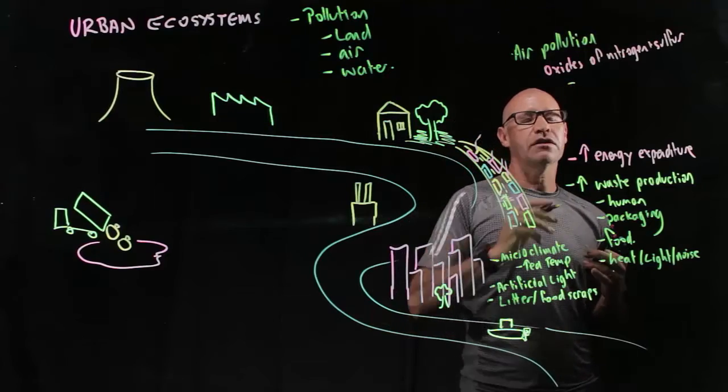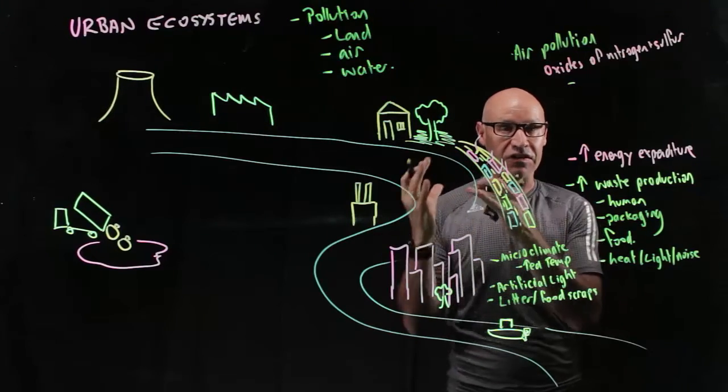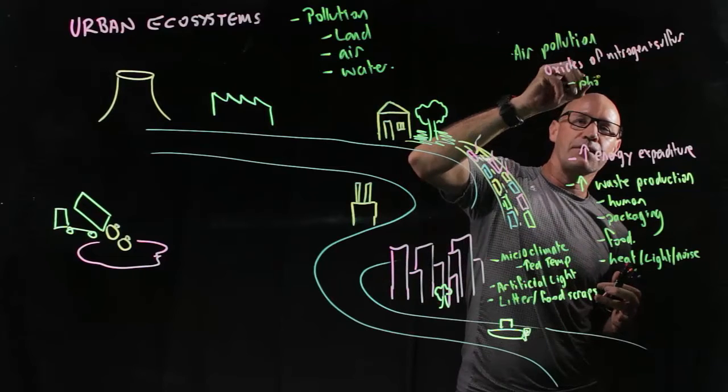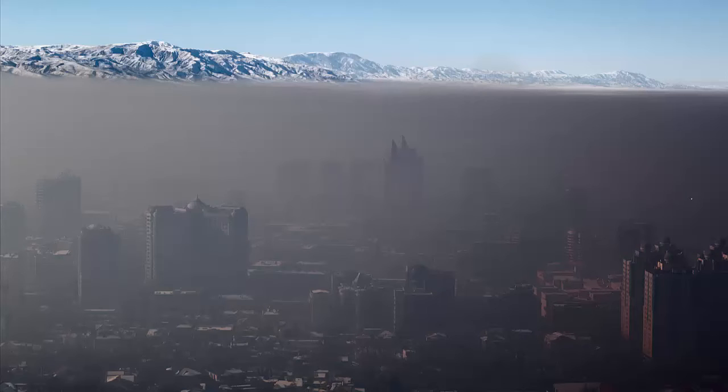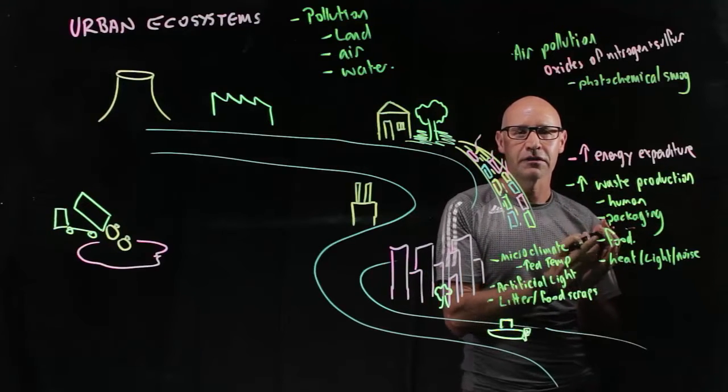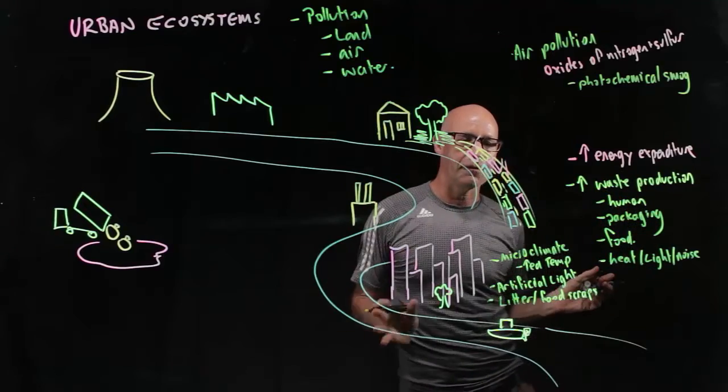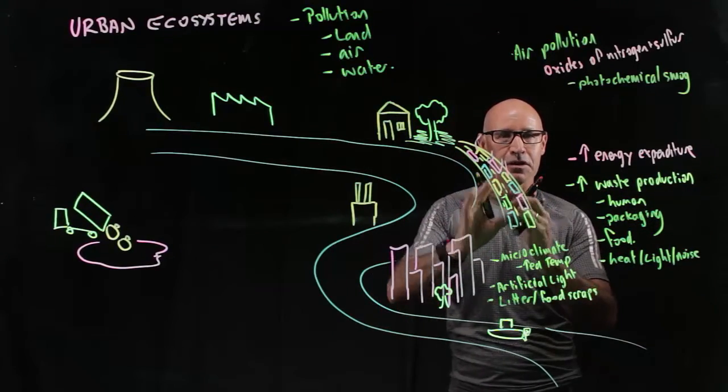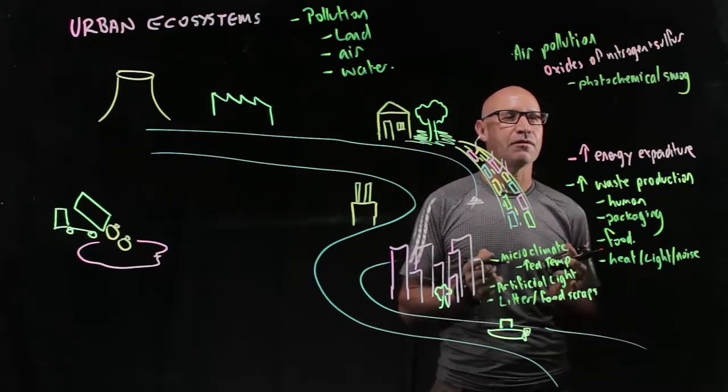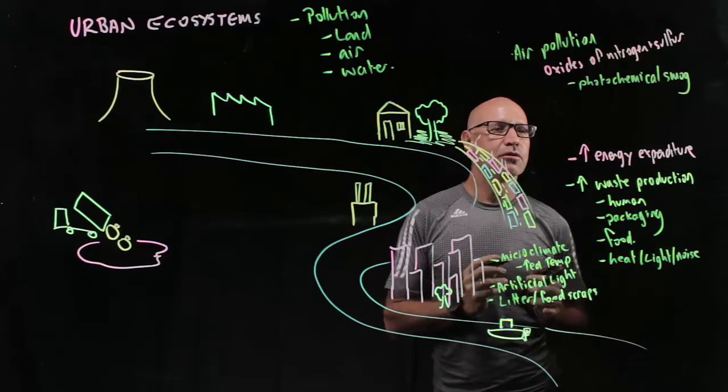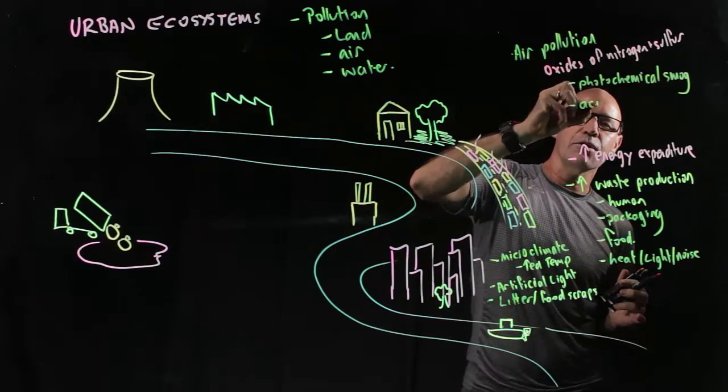As well as that, these oxides can react with the sunlight and cause photochemical smog, which you see in some cities in China and you see it in Los Angeles for example. So there's some parts of the world that tend to be more affected by these things, partly because of their topography, but largely because of the pollutants that are going into the atmosphere.